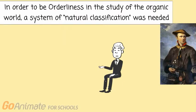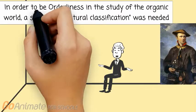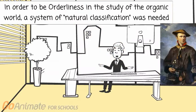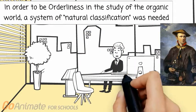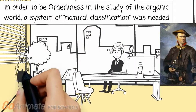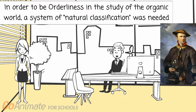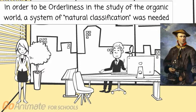In 1732, Linnaeus was awarded funding for a long-planned journey to Lapland. In the harsh northern land, he traveled about 2,000 kilometers, and he discovered over 100 species.